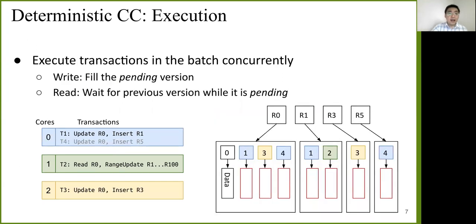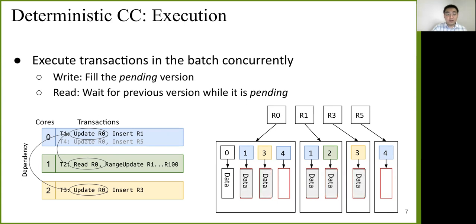After we finish initialization, we can execute transactions in the batch concurrently. For each write operation, it's very simple. We simply fill the pending version with the actual value. But for read operations, we need to be careful here. Here we can see that T2 and T3 have a conflict with T1 because T2 and T3 need to read T1's update. So the way we handle this is that when T2 and T3 execute concurrently, they're going to read version 1. And if version 1 is still pending, it waits until version 1 has a value. So when version 1 has a value, it means transaction 1 has finished so that T2 and T3 can execute concurrently. T2 and T3 can execute concurrently because there's no conflicts between them.